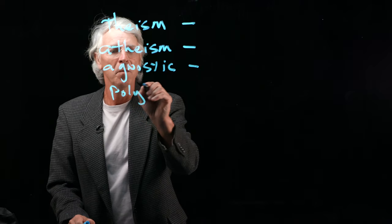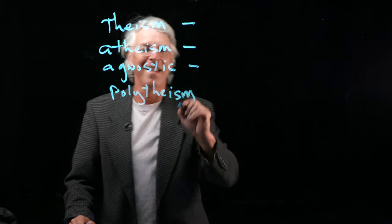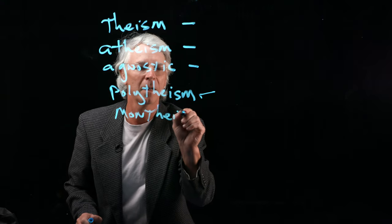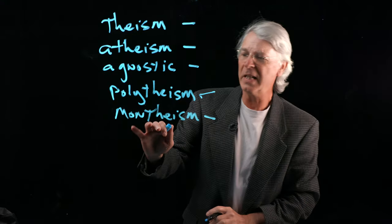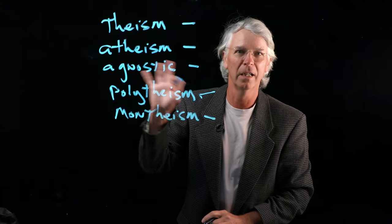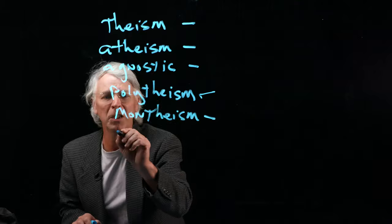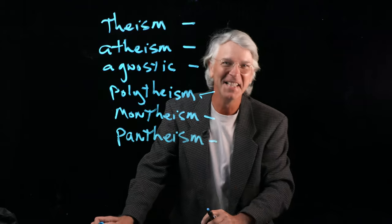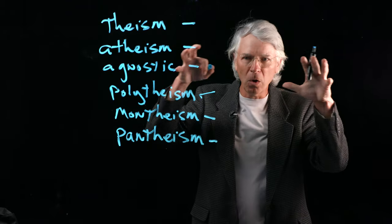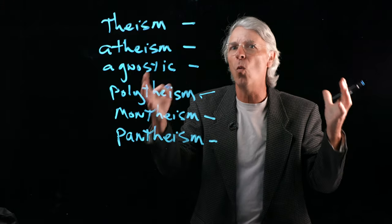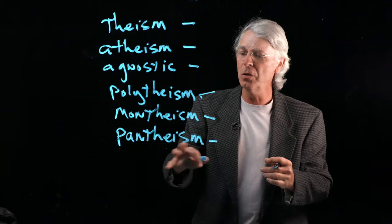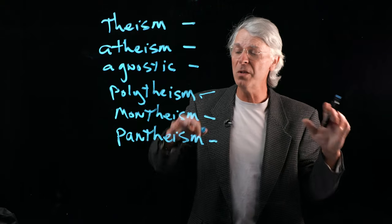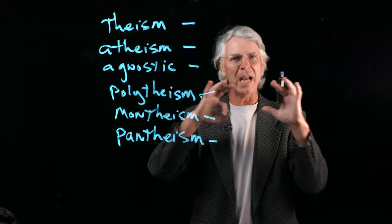How about polytheism? Polytheism means lots of gods. And monotheism — monotheism is one God. How about pantheism? Pantheism is kind of interesting. It sort of means that there is like a world soul and everything is kind of all one big God — you could include trees, animals, humans — all of it is like one big idea of God.